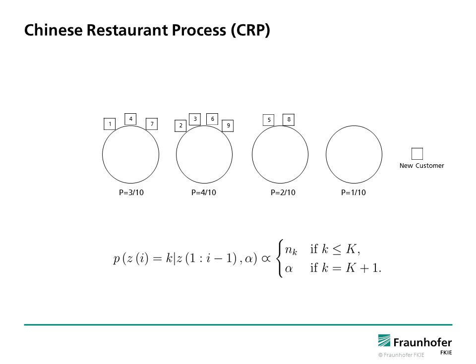The distance-dependent Chinese restaurant process is an extension of the traditional Chinese restaurant process. Assume a restaurant with an infinite number of tables. Customers enter the restaurant one by one. They sit at the occupied tables with a probability proportional to how many customers are already sitting at that table.